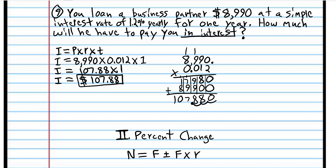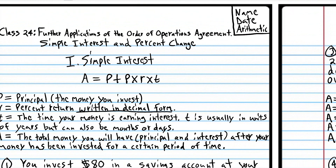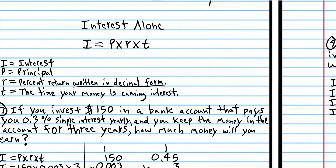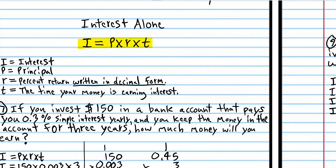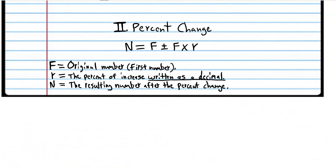We learned how to compute the total amount of money in your savings account after you earn interest, and we also figured out how to calculate interest alone. The two formulas are: A equals P plus P times R times T for the total amount of money in your bank account, and I equals P times R times T for just the interest alone. Now for the rest of the class, we're going to learn the second application of the order of operations agreement: percent change.